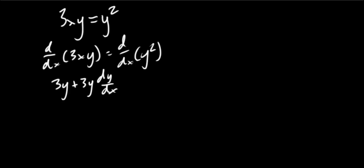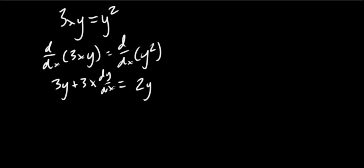Hold on — I accidentally wrote 3y, let's correct that to 3x. So we have 3y plus 3x dy/dx, and then on the right side of the equation we have 2y dy/dx, just like in the previous example.